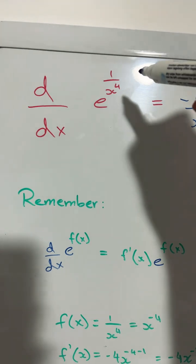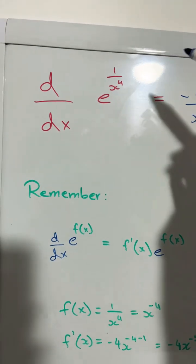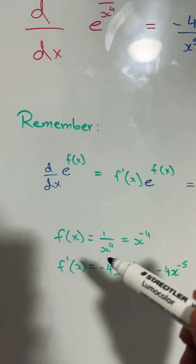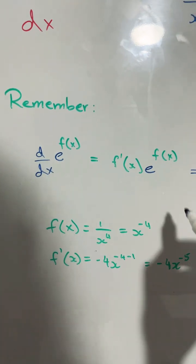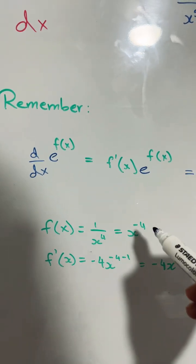So in this question our f of x is 1 over x to the power of 4. And remember we can write that as x to the power of negative 4. So we can bring any denominator to the numerator by making the power a negative.